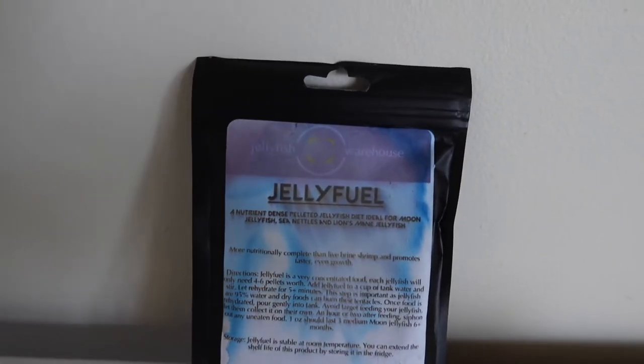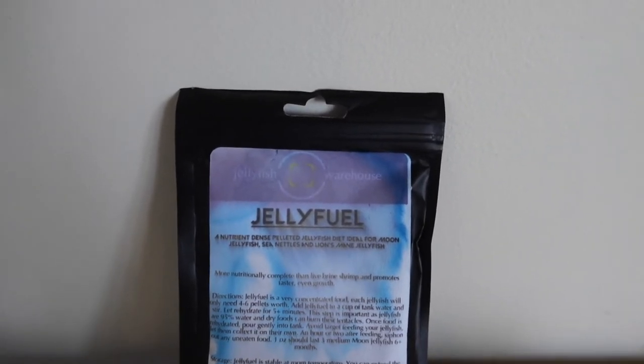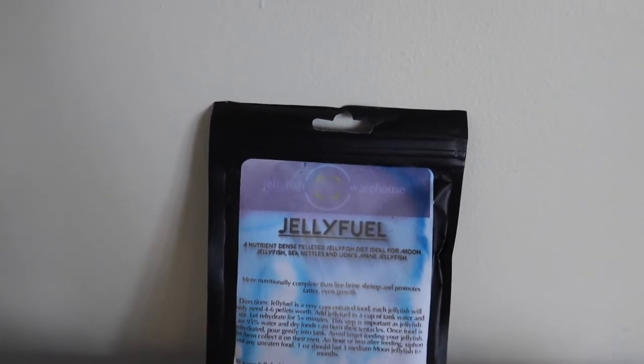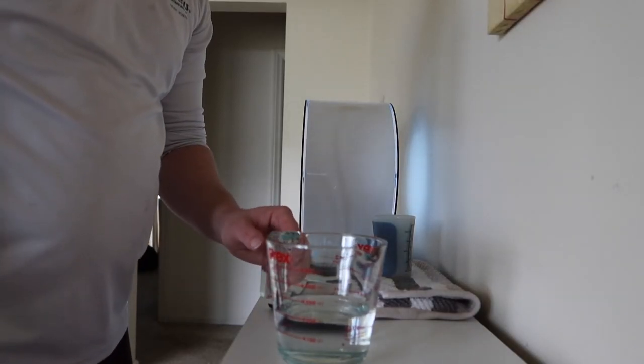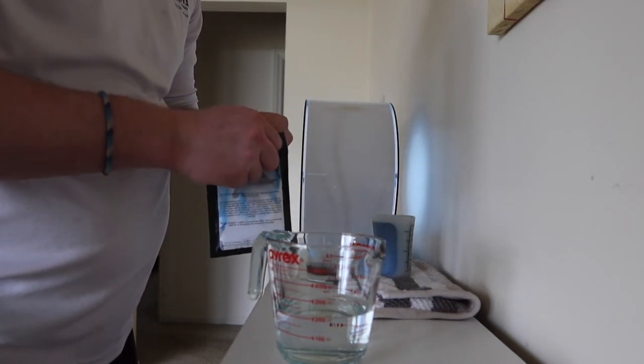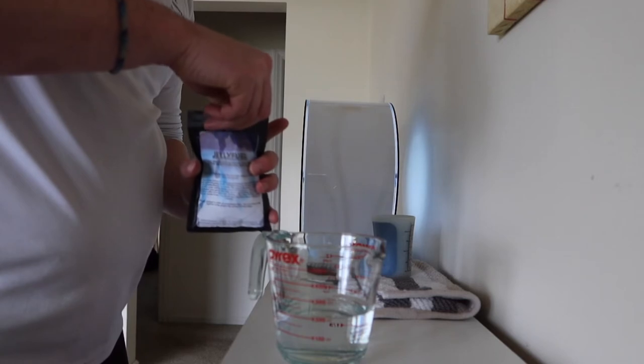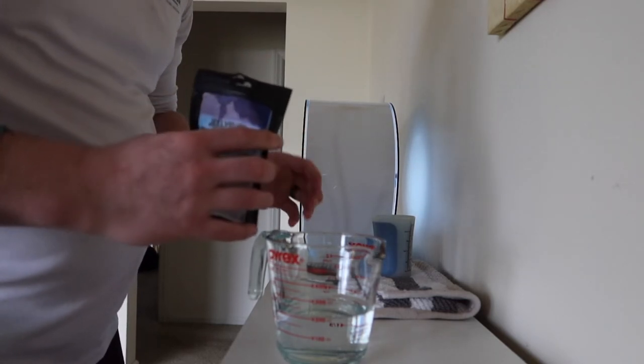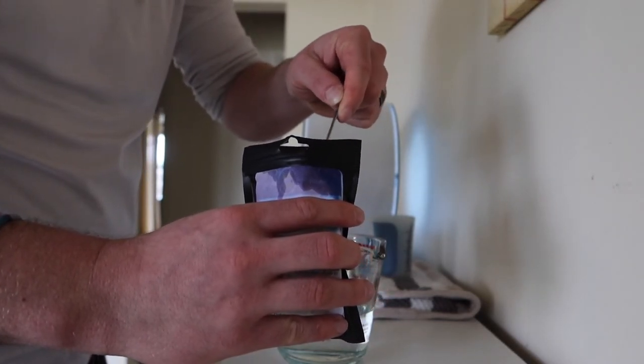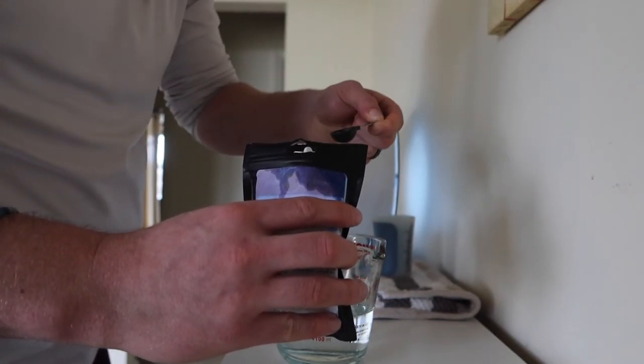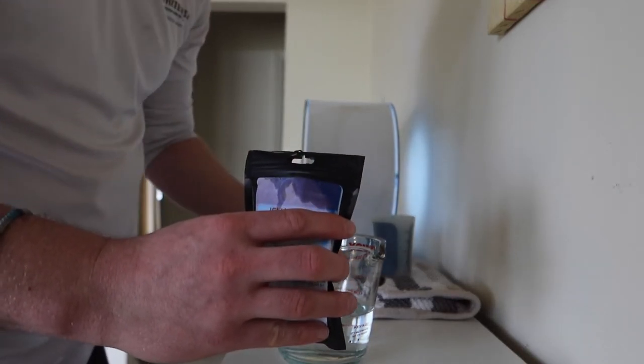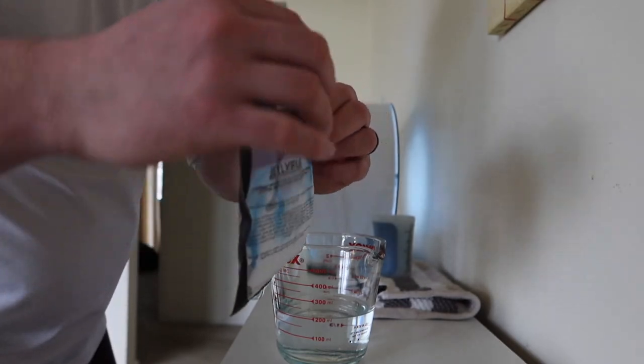So this is the jelly fuel. It's a powdered brine shrimp and we're going to go ahead and mix up some of this and then feed it to them. I mixed in roughly a cup of the tank water and we're going to go ahead and take just a few pellets for each of the jellyfish from the jelly fuel and mix that into the water.